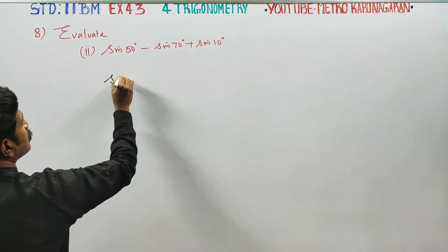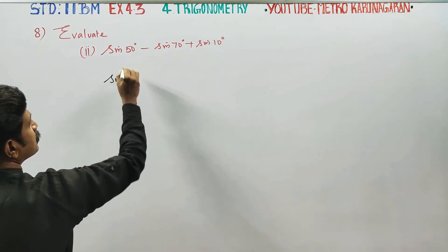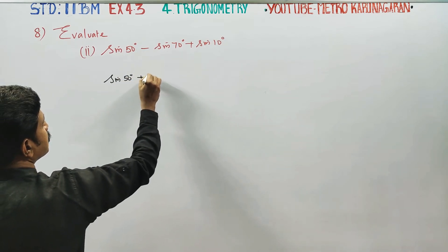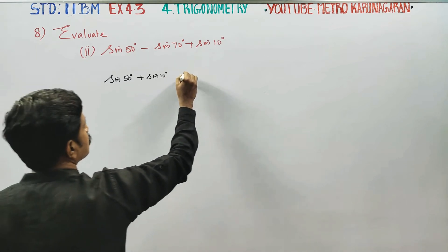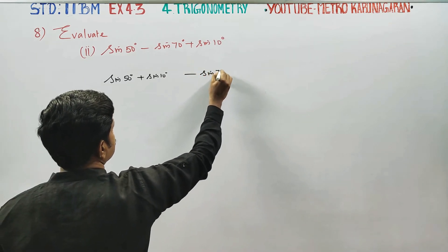What is this? Sin 50 degrees plus sin 10 degrees minus sin 70 degrees on this side.